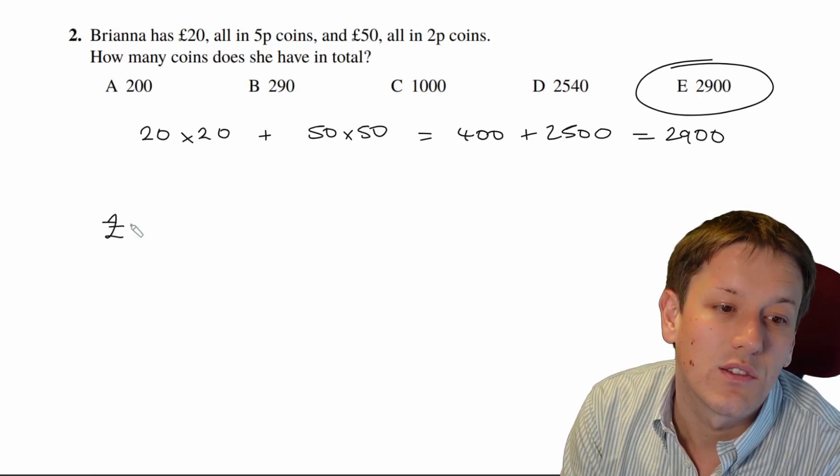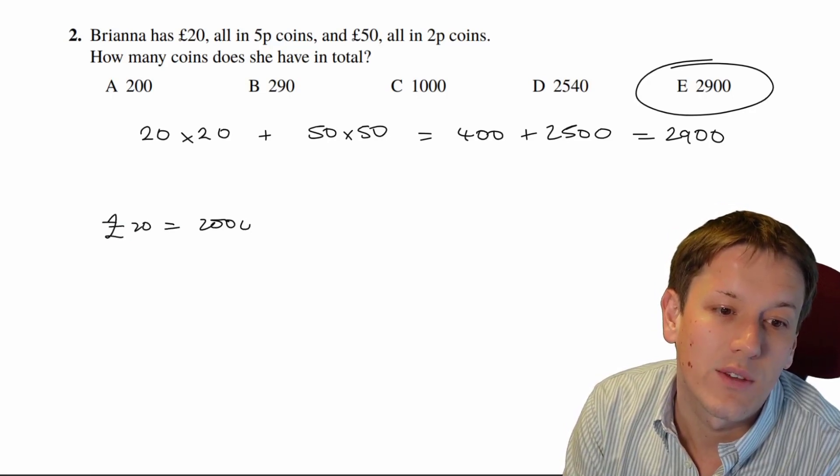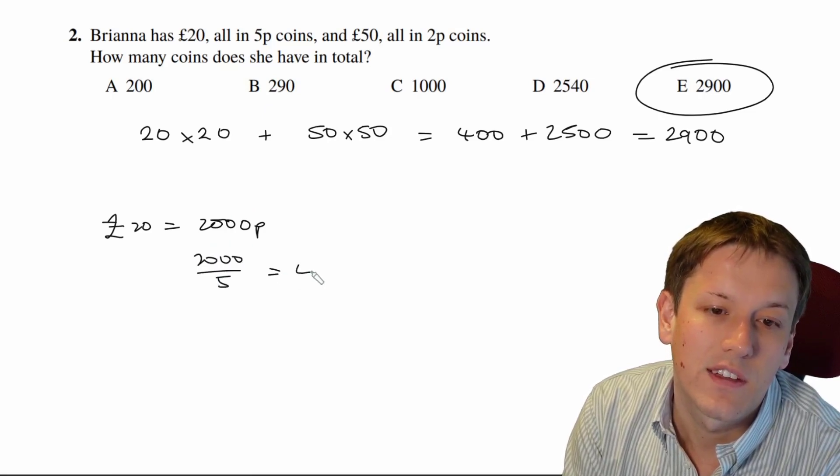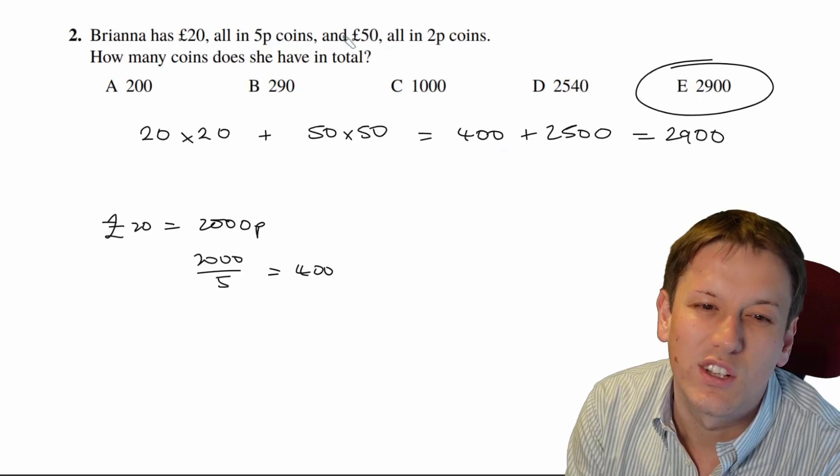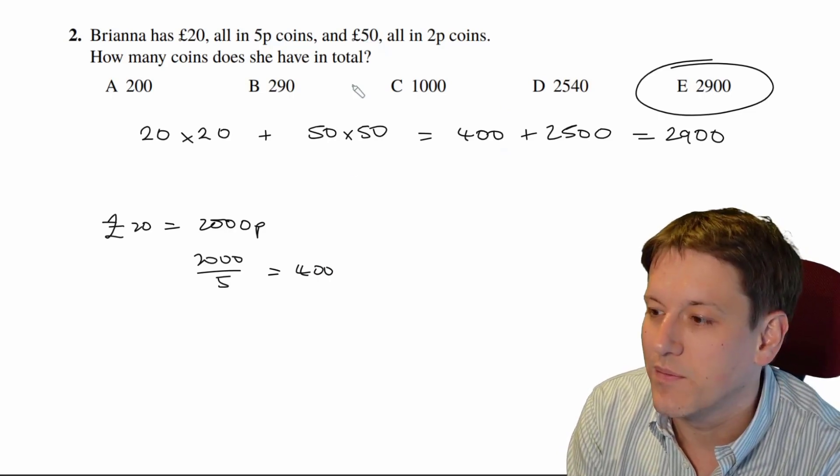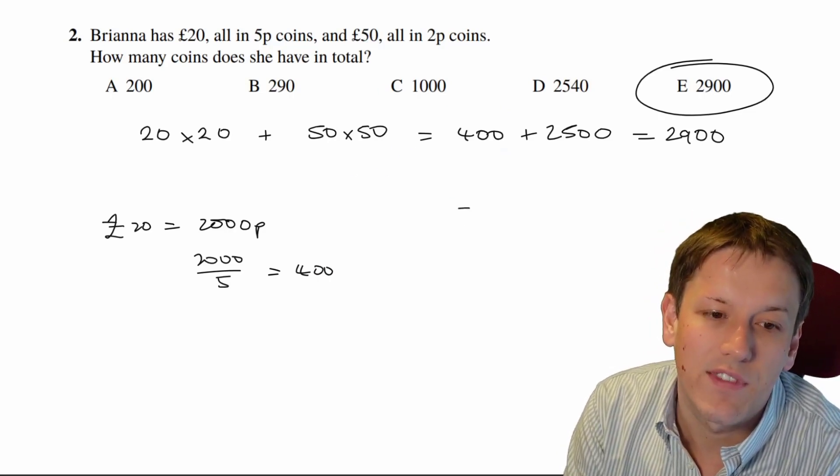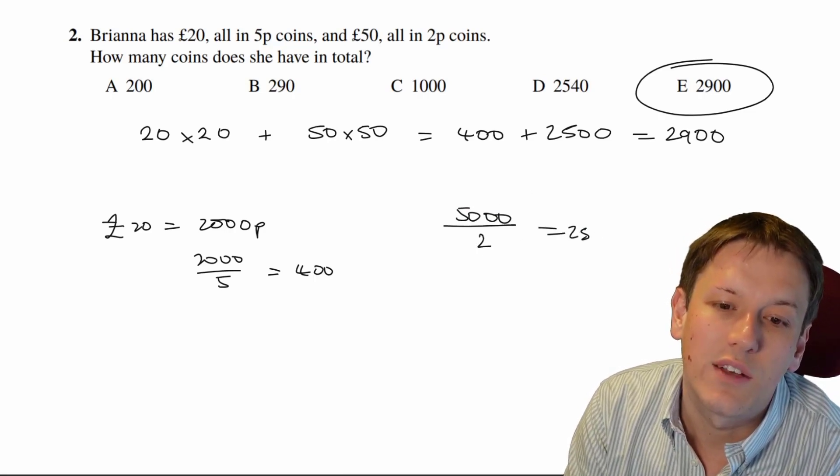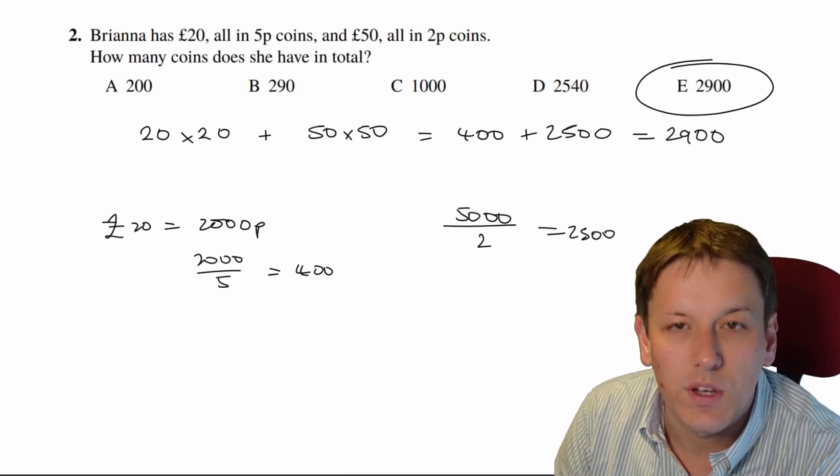Alternatively, you could say 20 pounds is 2,000p, and do 2,000 divided by 5 to get the 400, and you could do the same here, 50 pounds is 5,000p, and divide that by 2p to get 2,500, and add them together. Either way, we get the same answer.